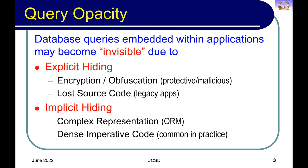Alternatively, you may have opacity because of implicit hiding, because of many tools we use in the relational world. Often there are object-relational mappings where the application developer can think of the underlying database as an object-oriented system, but then they get converted to relational equivalents. In these machine-generated mappings, the output SQL query is often extremely complex and almost impossible to understand. Something else that happens quite often is that programmers write imperative code because they are more familiar with it, resulting in dense imperative code that is hard to figure out.